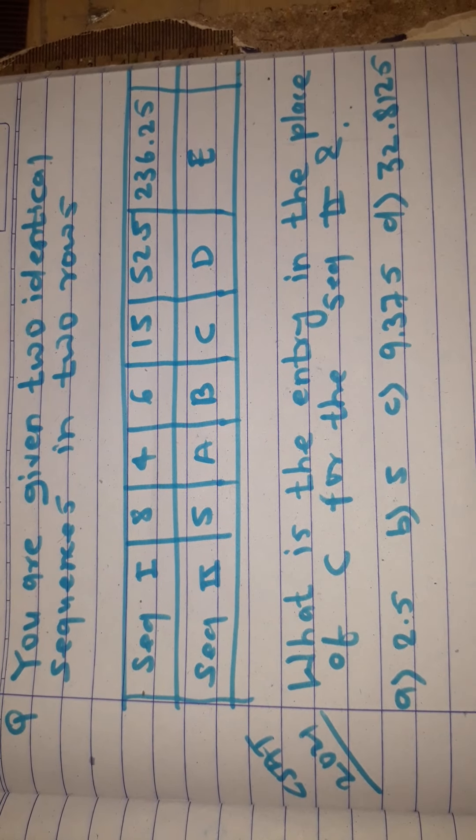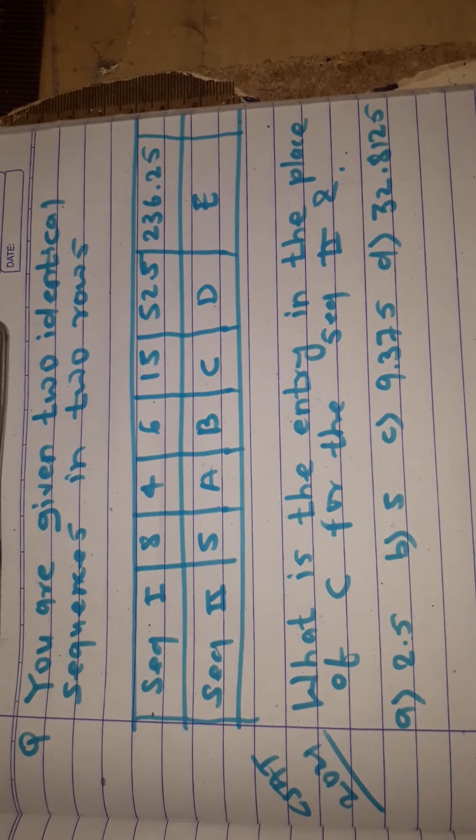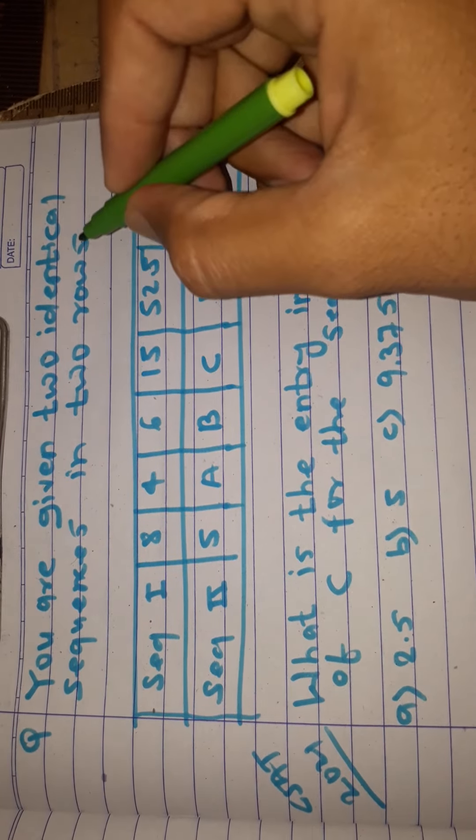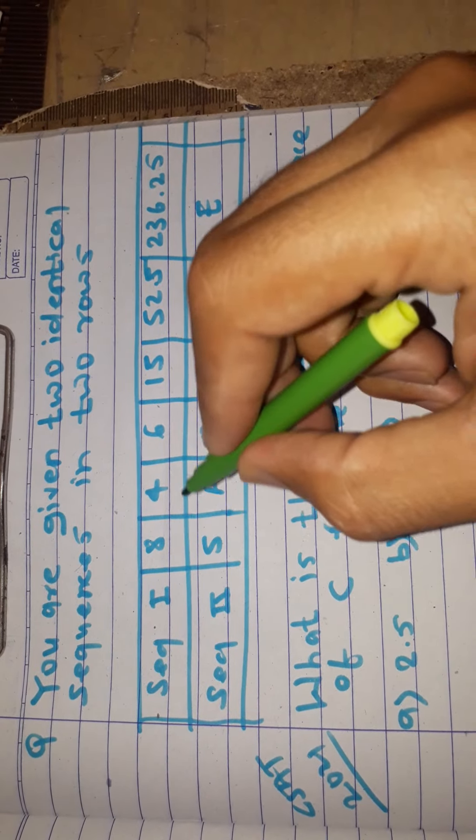Hello friend, today we are going to discuss a new topic. The topic is the third question from CSAT 2021. The question is: you are given two identical sequences in two rows. First sequence is 8, 4, 6, 15, 52.5, 236.25.